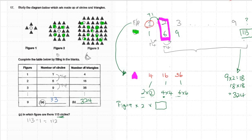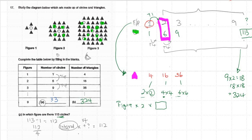112 is the interval total, because I subtract the first number. Now I want to find the pattern number, so I use 112 divided by four — since every increase is four — which gives me 28. That means there are 28 intervals from the first figure to here. Every jump in figure is plus one, so 28 times one equals 28. Then I add back the first figure number which is one, giving pattern number 29.